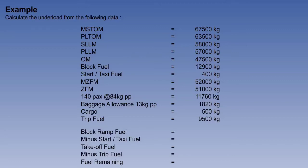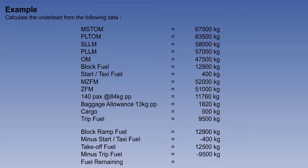For the first step, we must apply the golden rule of working out the fuel state first. This is done by constructing a table of the fuel data, starting with the block ramp fuel of 12,900 kilograms. We enter the start taxi fuel of 400 kilograms and subtract it from the block ramp fuel, which gives the take-off fuel of 12,500 kilograms. The trip fuel of 9,500 kilograms is subtracted from the take-off fuel, giving a fuel remaining on landing of 3,000 kilograms.